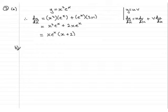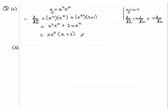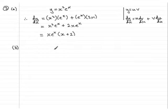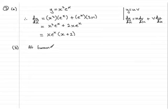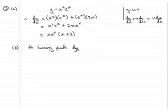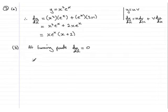Now we move on to part b. It asks us to hence find the coordinates of turning points of the curve C — 'hence' meaning to use the last answer. At turning points we know that the gradient of the curve is going to be 0, so at turning points dy/dx equals 0.